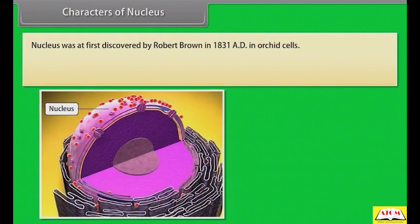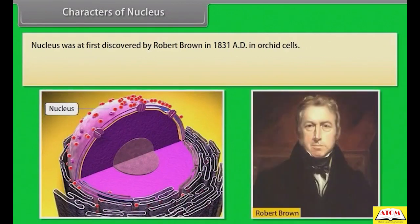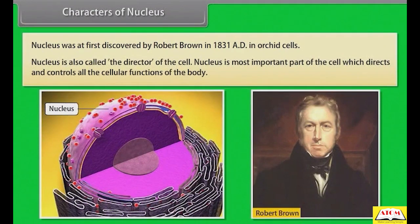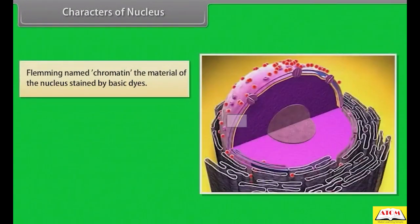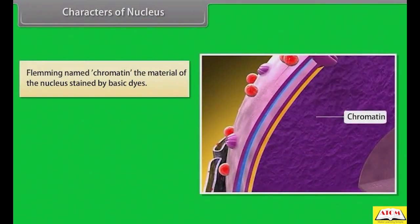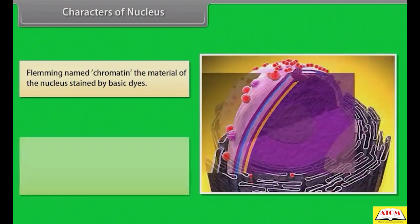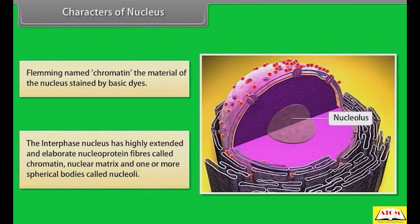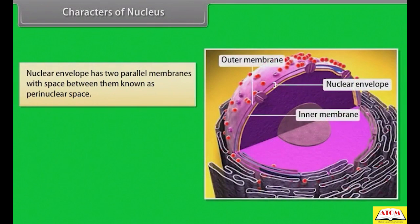Nucleus was first discovered by Robert Brown in 1831 AD in orchid cells. Nucleus is also called the director of the cell. It is the most important part of the cell, which directs and controls all cellular functions. Fleming named chromatin the material of the nucleus stained by basic dyes. The interphase nucleus has highly extended and elaborate nucleoprotein fiber called chromatin.